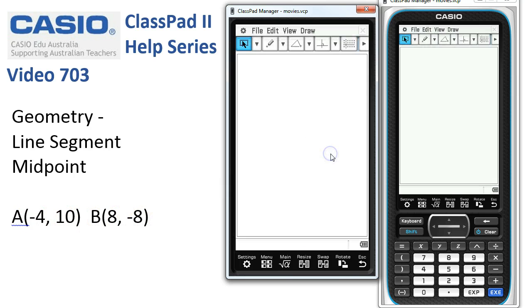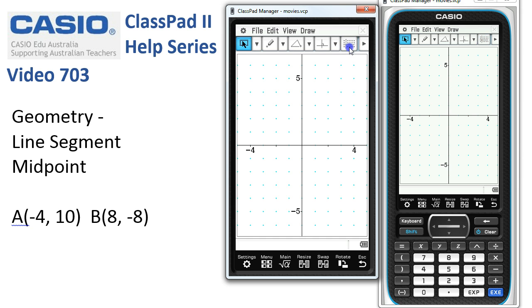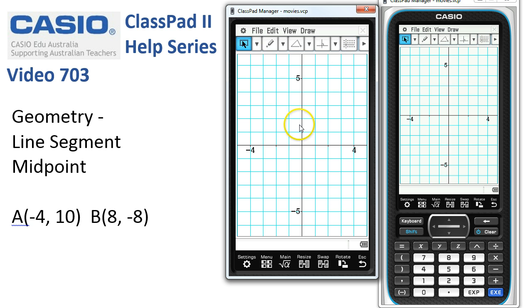So we'll start in the geometry application. First off, as usual, file new just to tidy things up. Then we're going to tap onto the axes, axes with scale, axes with dot grid, and axes with a line grid on the background, because we're doing some coordinate work.